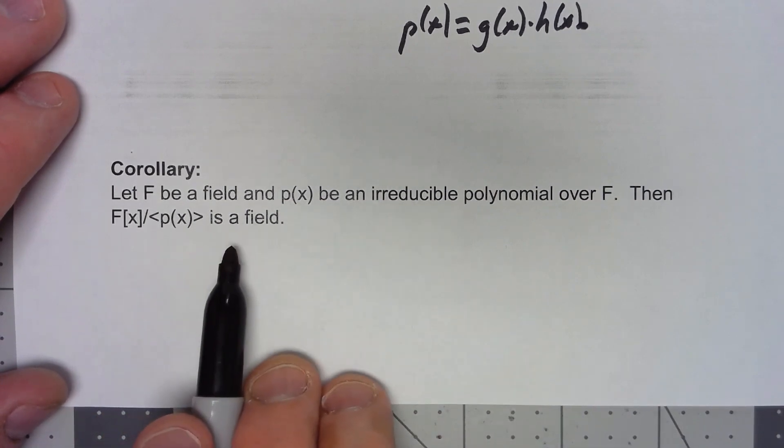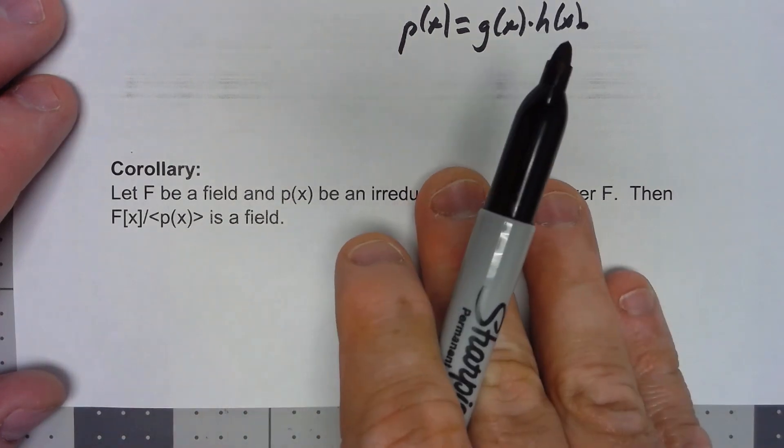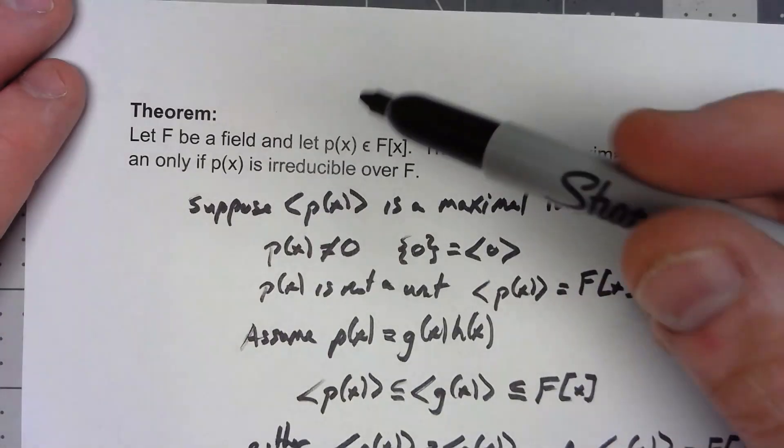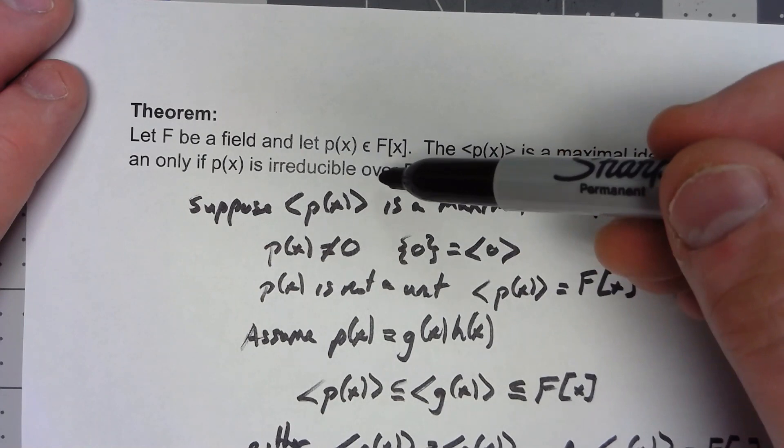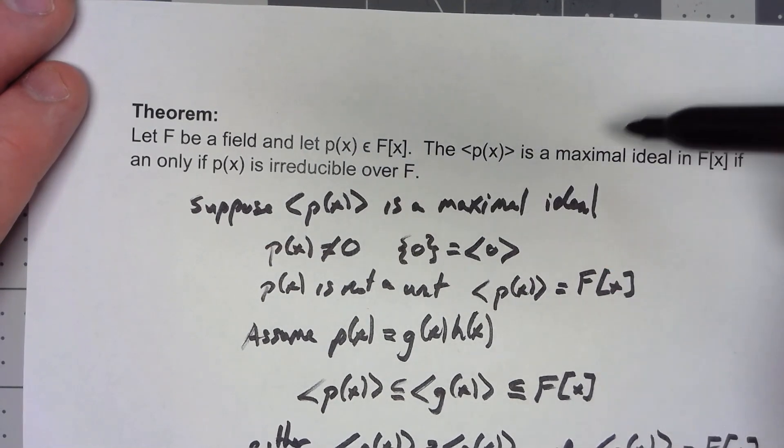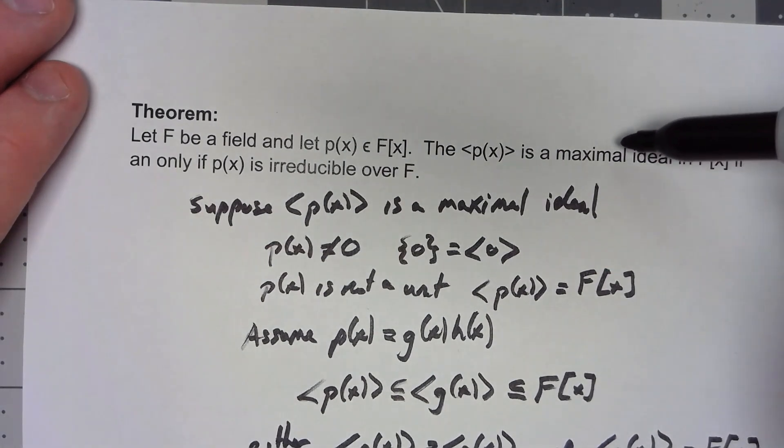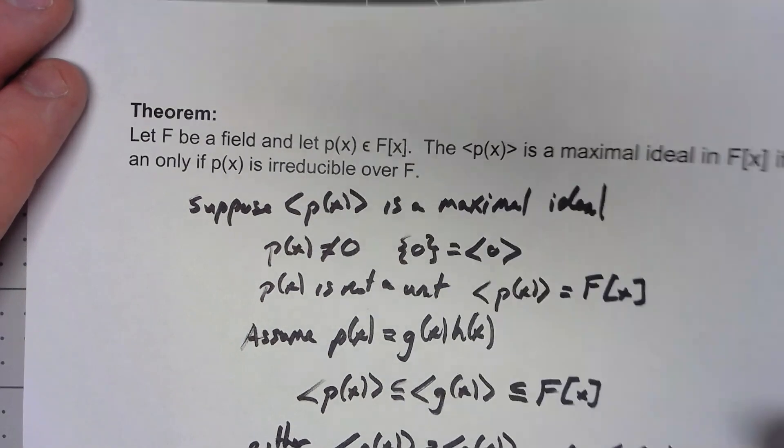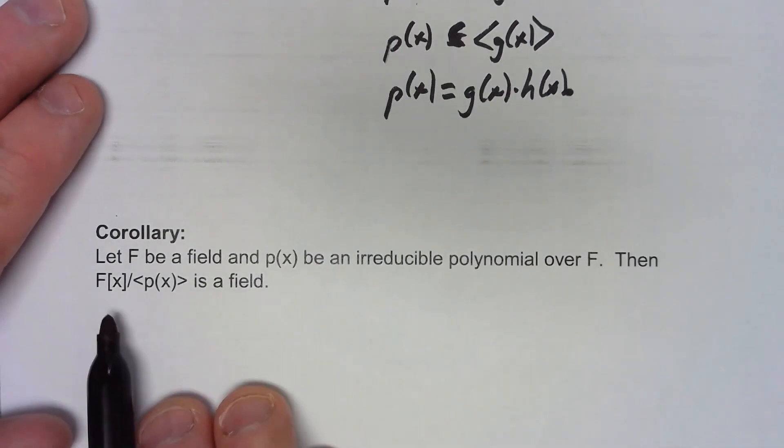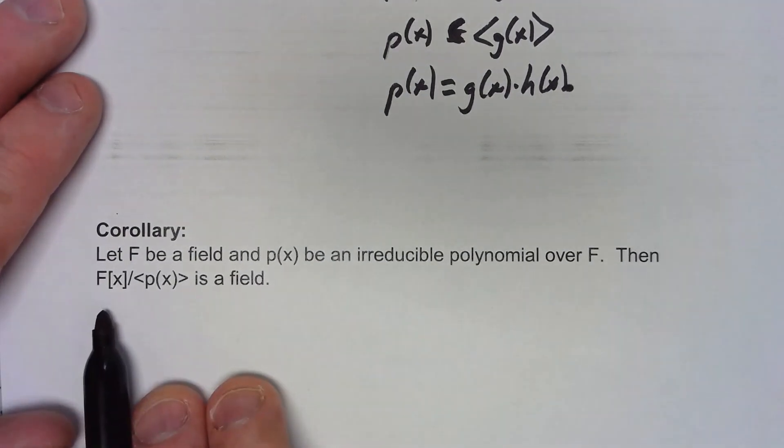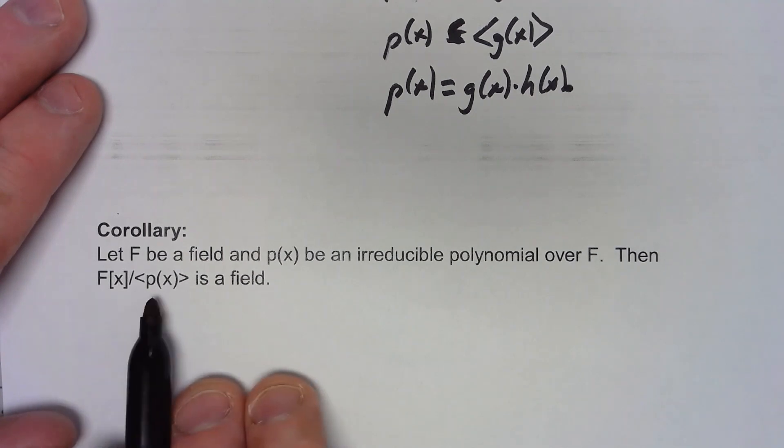Why is that? Well, because p(x) is irreducible. By this, the ideal generated has to be a maximal ideal, and we've shown before that when we take a quotient ring over a maximal ideal, it becomes a field.